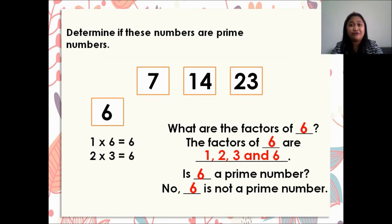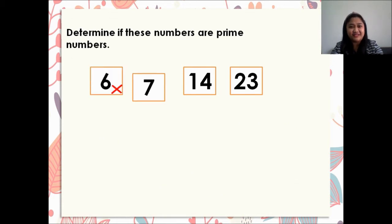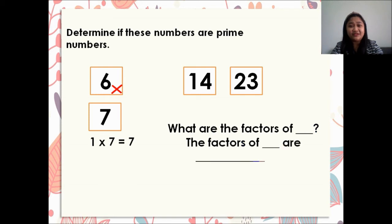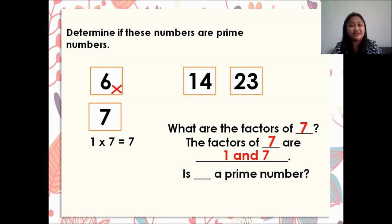Very good. No, 6 is not a prime number because 6 has more than 2 factors. Next, let's have 7. What are the factors of 7? We have 1 times 7 equals 7, so the factors of 7 are 1 and 7. Is 7 a prime number? Yes, 7 is a prime number. Very good.